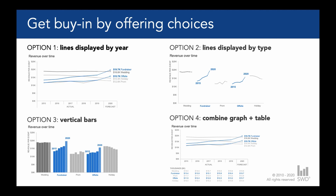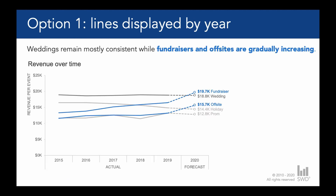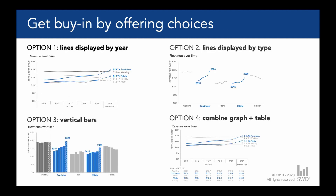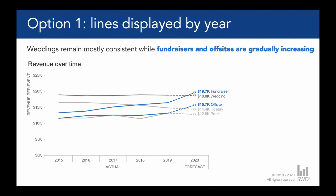That conversation might sound something like this: 'Today I'd like you to consider four different views that we might use to talk through this data.' Let's look at option number one, which is lines displayed by year. With this line graph, we can easily refer to a given event type and track its revenue trend over time. And we can look at a specific year, such as 2020, and compare revenue across our different event types. This is a view that puts me in the right frame of mind to think about what we might do with this data, but I also want to run you through the other options and get your opinion.